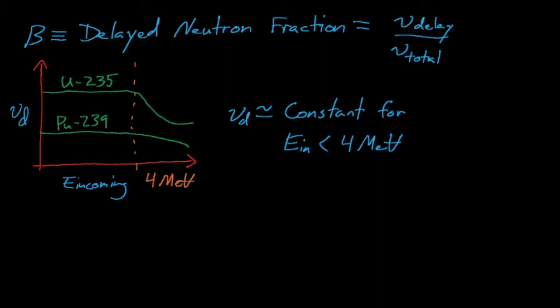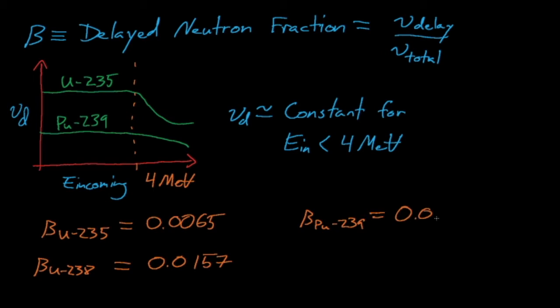Beta is also a function of isotope because some nuclei tend to create fission products that will emit more or fewer delayed neutrons. Some sample values for beta are listed here for different isotopes of uranium and plutonium. You see that beta increases by a factor of 8 from plutonium-239 to uranium-238. So you can see that beta really varies very significantly for these different isotopes.